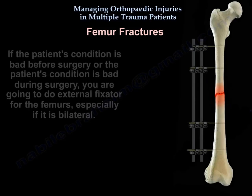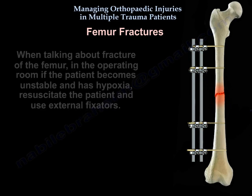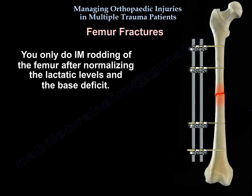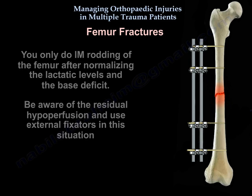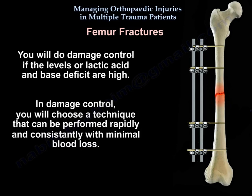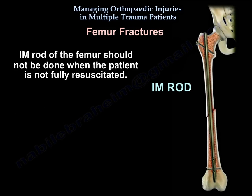For femur fractures, if the patient's condition is bad before or during surgery, perform external fixation — especially if bilateral. If the patient becomes unstable and hypoxic in the operating room, resuscitate and use external fixation. IM rodding of the femur should only be done after normalizing lactate levels and base deficit. Be aware of residual hypoperfusion. In damage control, choose a technique that can be performed rapidly with minimal blood loss. Intramedullary rodding of the femur should not be done when the patient is not fully resuscitated.